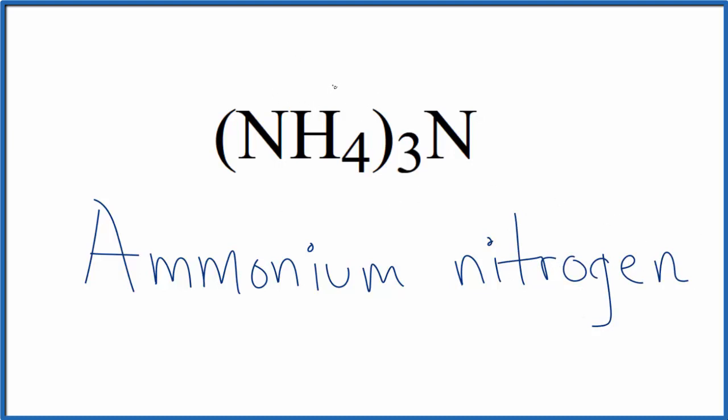The ammonium ion has a charge of one plus. We have three of them. Nitrogen forms ions that are three minus. This is called the nitride ion.